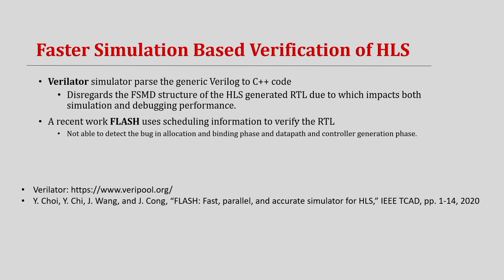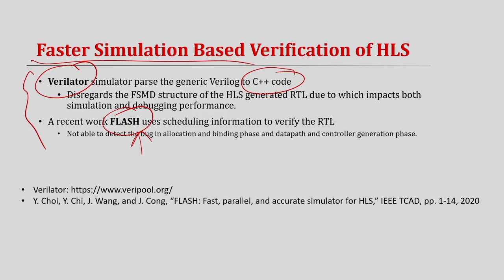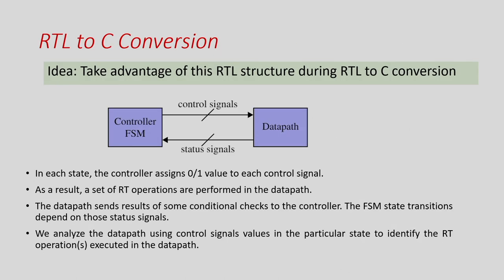There are two related works: Verilator, which generates C++ code from Verilog, but the HLS-generated RTL has a very specific structure that Verilator does not account for, so the generated C++ is not readable or debug-friendly. The second is Flash, which generates C code from scheduling information after scheduling — not from the RTL — so it cannot verify correctness of allocation, binding, datapath, and control generation steps. In our work, we convert RTL to C by taking advantage of the specific RTL structure generated by the HLS tool.